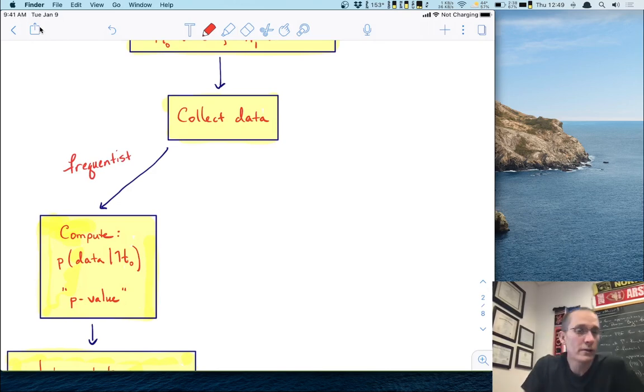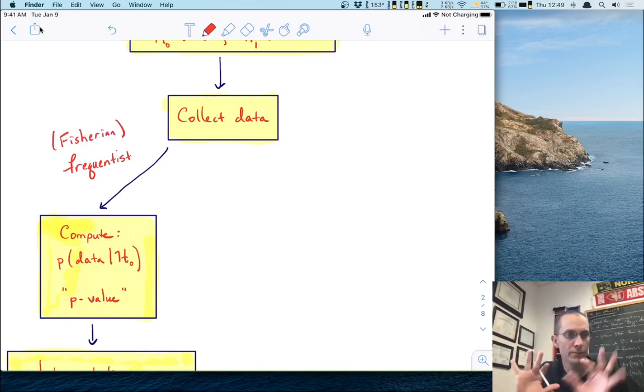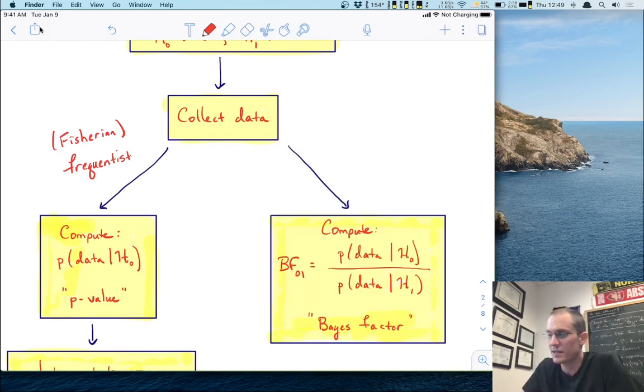And the use of p values particularly means that this is what's called Fisher or Fisherian frequentist testing. It's a little different from Nyman Pearson, but that's a different lecture for a different day. So that's one path. Well you can see there's some space on my screen. I might have another path up my sleeve. And here's the other path.